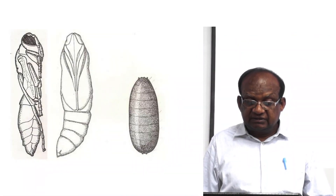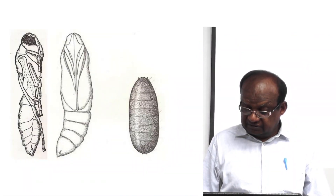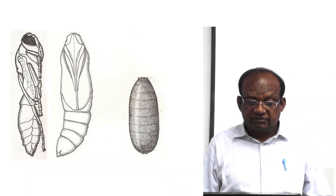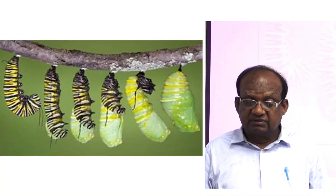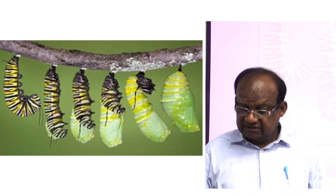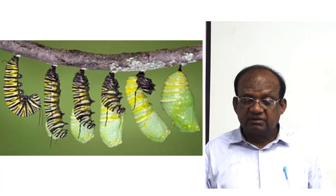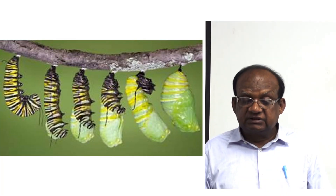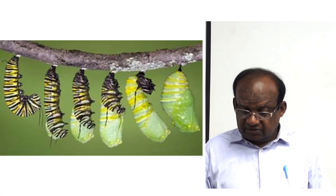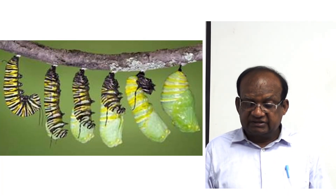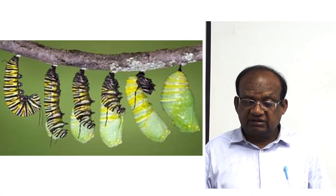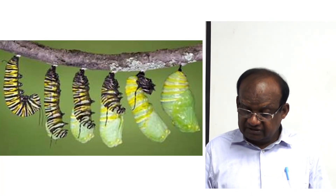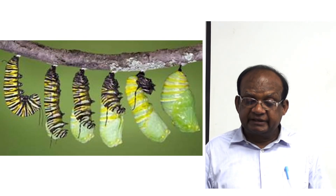These are the pictures of this category of pupa. Different types of pupa are seen here. This is all about the categorization of insect larvae and categorization of insect pupa. Thank you.